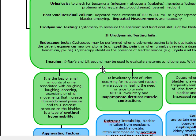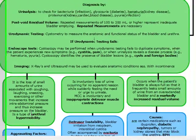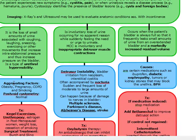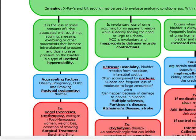The first type is stress incontinence, probably the easiest and most commonly tested. It's associated with activity — patients lose urine when they cough, laugh, sneeze, exercise, or make sudden movements — anything that increases intra-abdominal pressure and thus increases bladder pressure. This is a type of urethral hypermobility. Aggravating factors include obesity, pregnancy, COPD, and smoking.